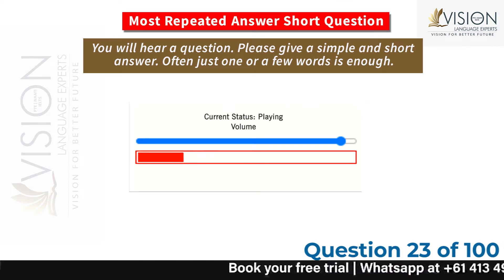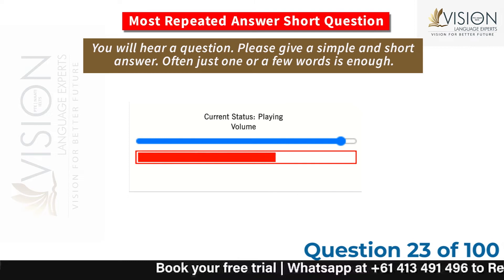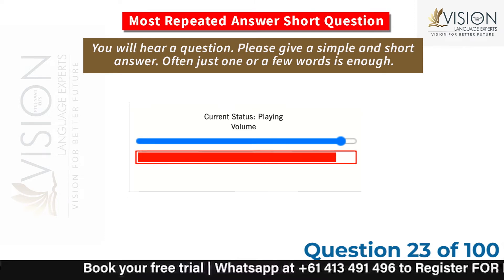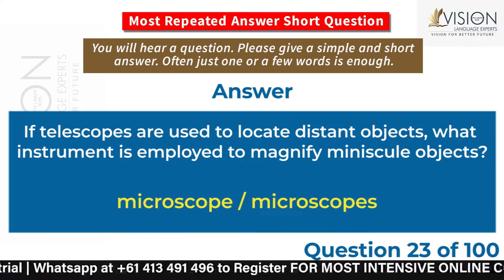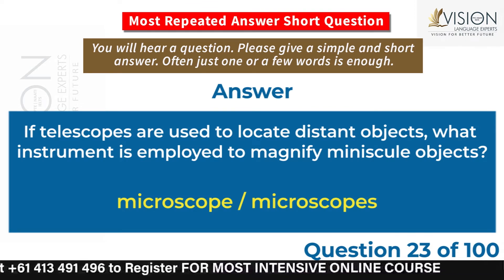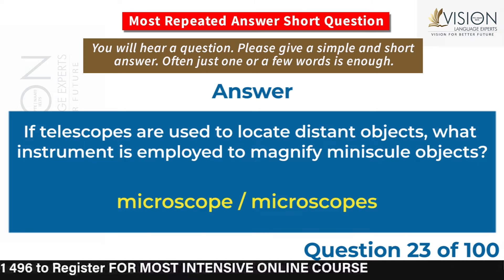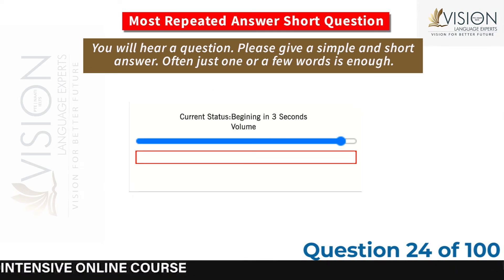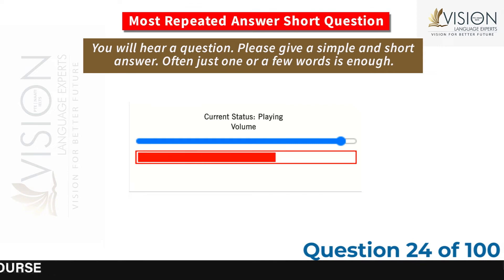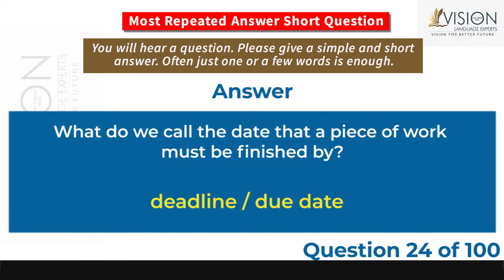If telescopes are used to locate distant objects, what instrument is employed to magnify minuscule objects? Microscope. What do we call the date that a piece of work must be finished by? Deadline, due date.